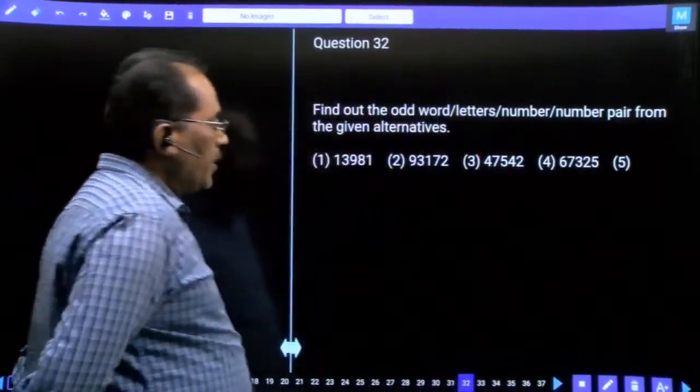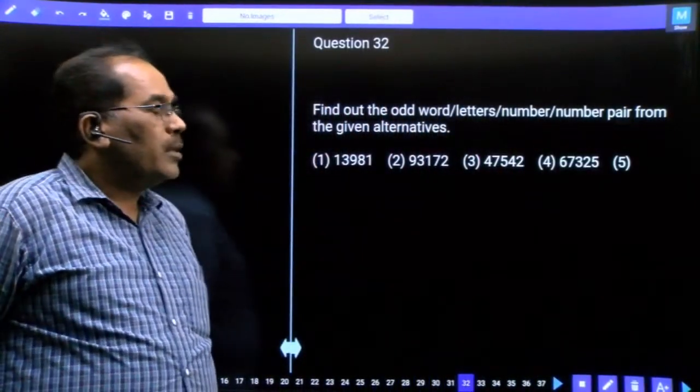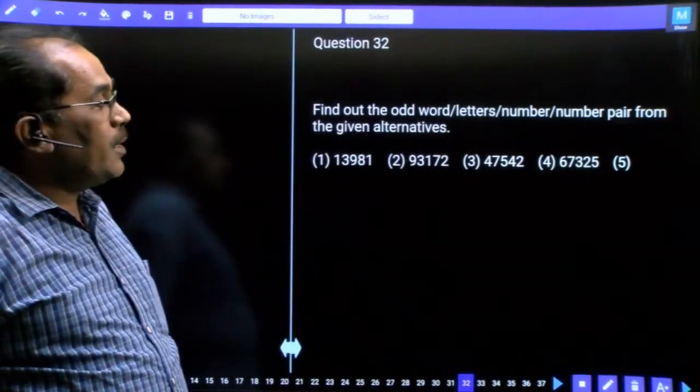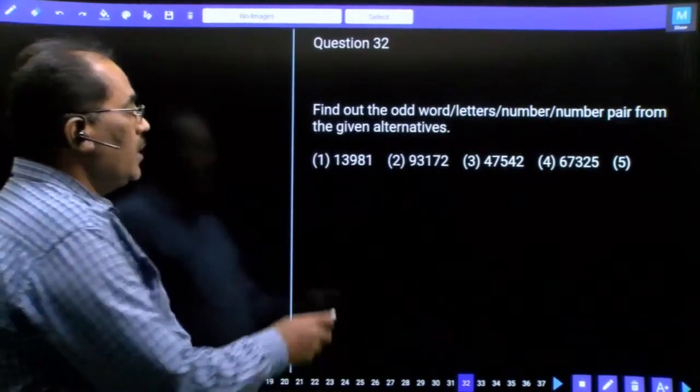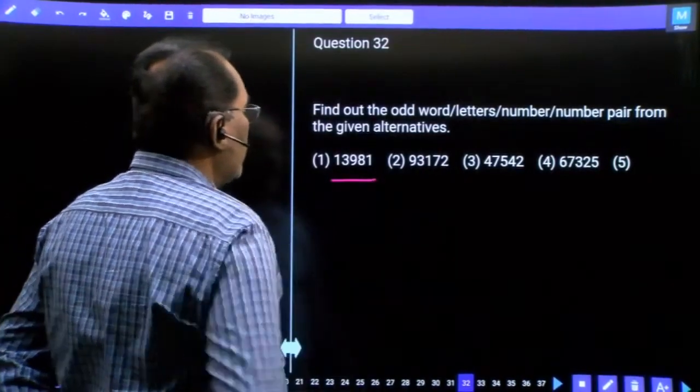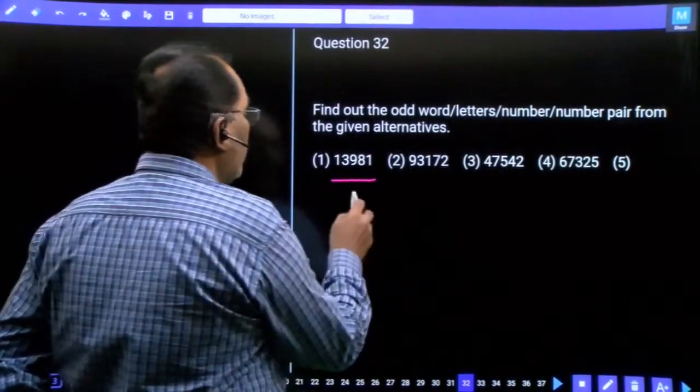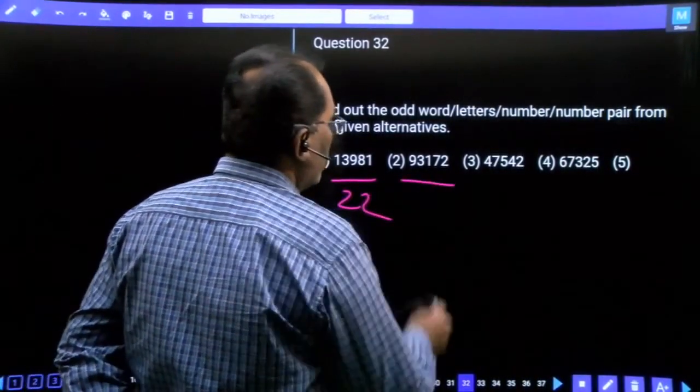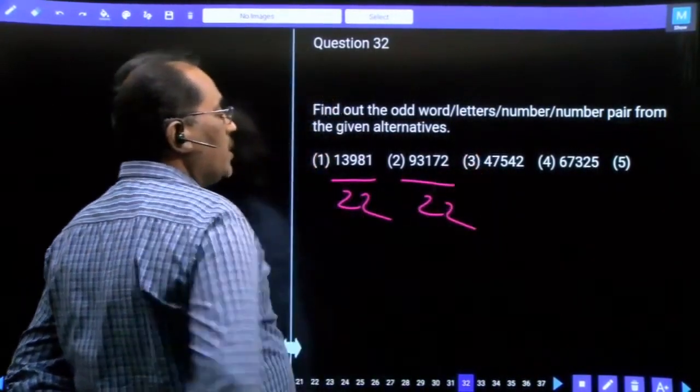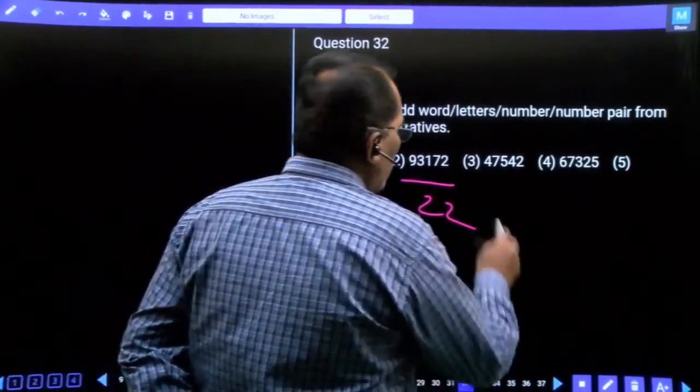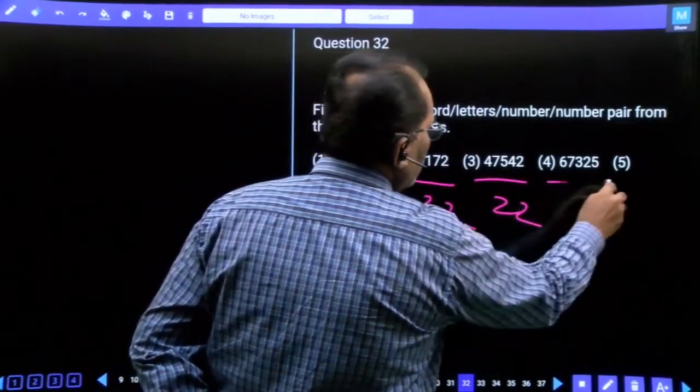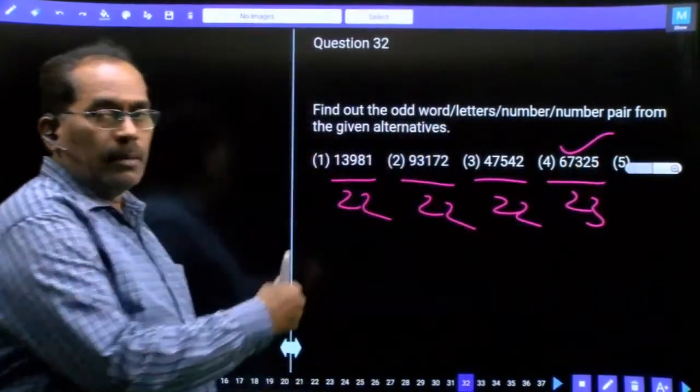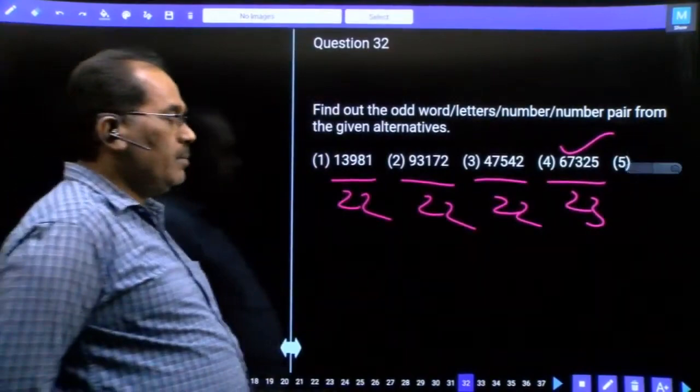Question number 32, this is number odd man out. Looking at the sum of digits: 4 plus 9 is 13, 13 plus 8 equals 21, 21 plus 2 is 23. Our option is fourth option. The remaining have the sum of digits property.